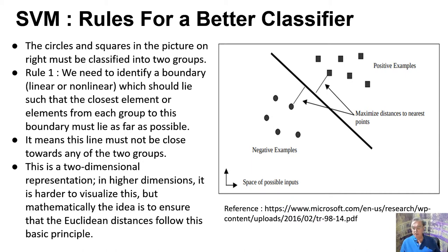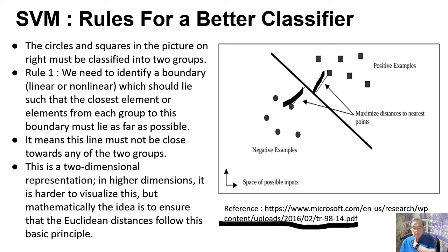There's some mathematics to find the optimal line or surface in a higher dimension. The methodology is to find the line that maximizes the distance to the nearest point, in order to maximize this distance on both sides. This is easy to do in two dimensions as drawn here. We're trying to define this line which clearly lies between the points in some optimal fashion, and we just need to maximize the distances between the line and the points on each side.